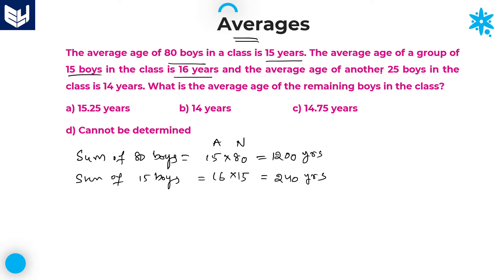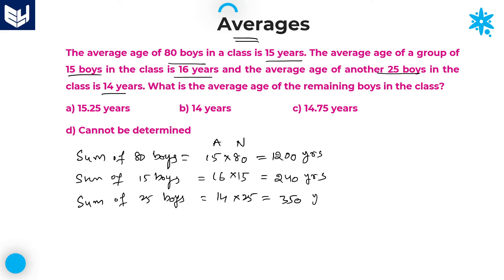The average age of another 25 boys is given as 14 years. Sum of 25 boys — if the average of any number of boys is given, obviously you will get the sum of those members. Sum of 25 boys is 25 × 14 = 350 years.